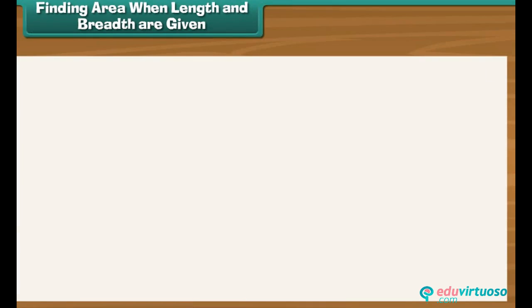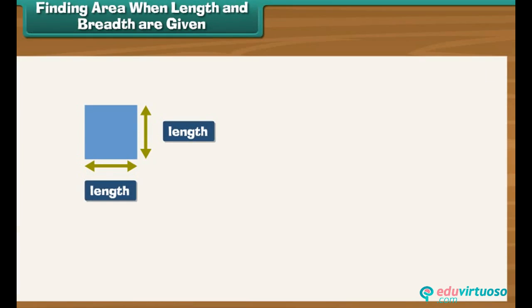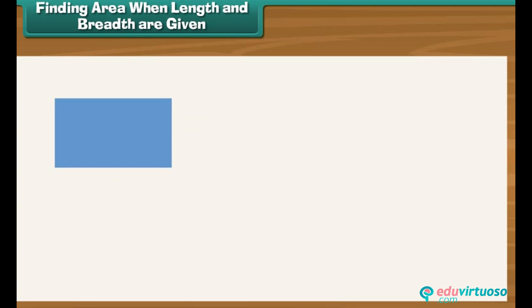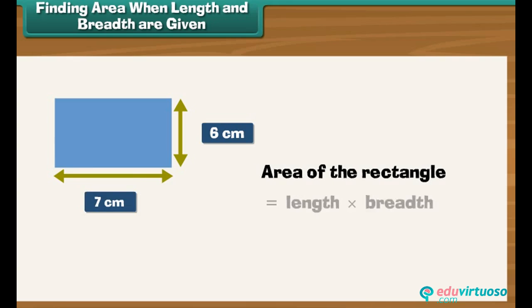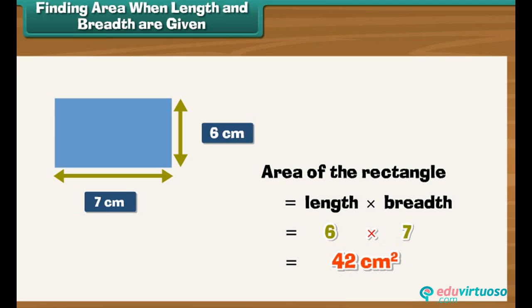Finding area when length and breadth are given. The area of a square is length into length. A square is a special rectangle whose length and breadth are equal. Now consider a rectangle which is not a square. The length of the rectangle is six centimeters and the breadth is seven centimeters. The area of the rectangle is equal to length into breadth, which is six into seven, which equals 42 centimeters square.